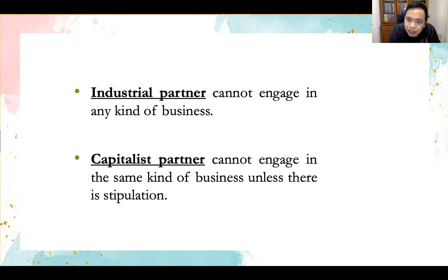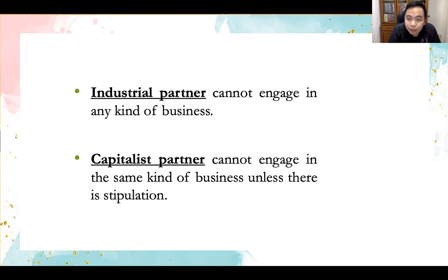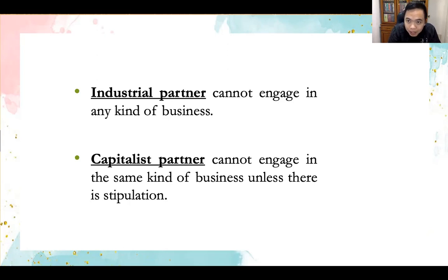On the other hand, a capitalist partner can engage in other businesses as long as those businesses are not in direct competition with the partnership. A capitalist partner only invests money or property and is not personally managing the affairs of the partnership the way an industrial partner is. So a capitalist partner can invest elsewhere, as long as it does not directly compete with the partnership.